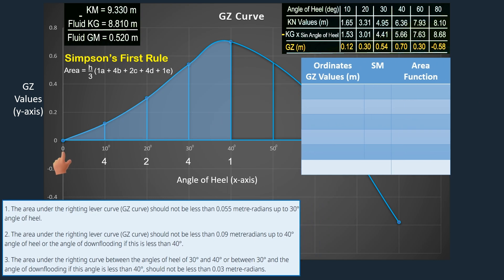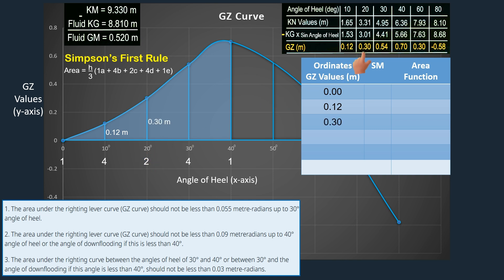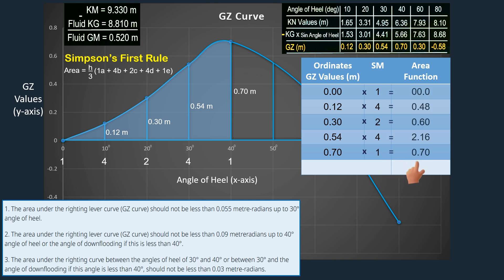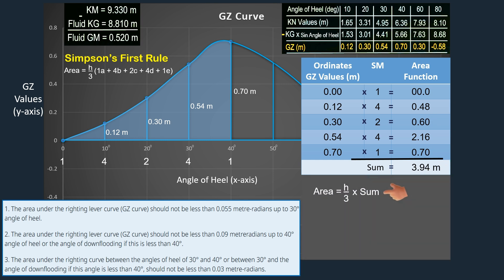When the vessel is upright, the GZ value is 0 — this is our first ordinate. At 10 degrees angle of heel, the GZ value is 0.12 meter. At 20 degrees, 0.30 meter. At 30 degrees, 0.54 meter. At 40 degrees angle of heel, the GZ value is 0.70 meter. Next, apply Simpson's multiplier to find the area function, then add to determine the sum. Use this simplified formula to calculate the area under the GZ curve up to 40 degrees angle of heel.